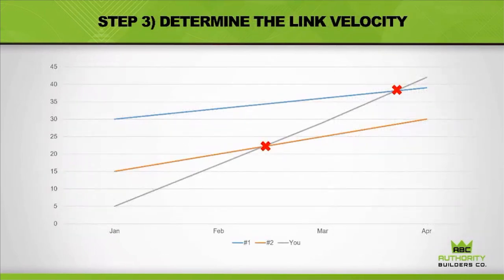We'll also help you determine your link velocity. If people on page one are all building five links per month, you need to build at a rate where you'll actually catch them. Even if you close the link gap, it doesn't matter if they're still building faster than you and widening it as fast as you're filling it. We'll plot out Monte Carlo charts to help you figure out what your link velocity should be.